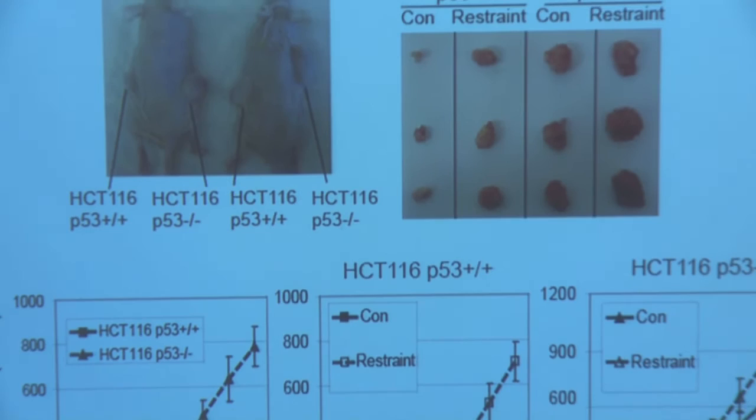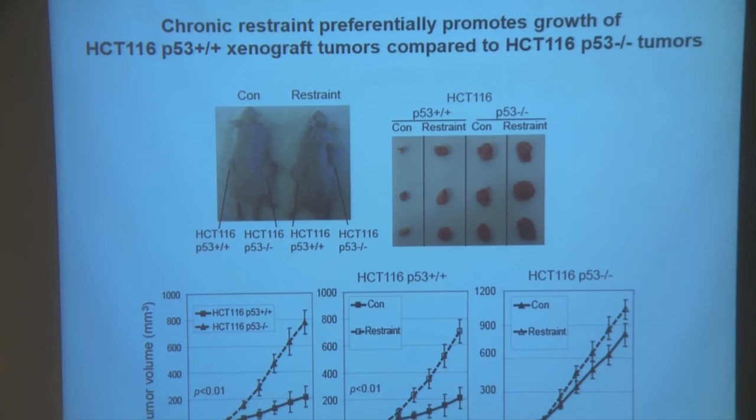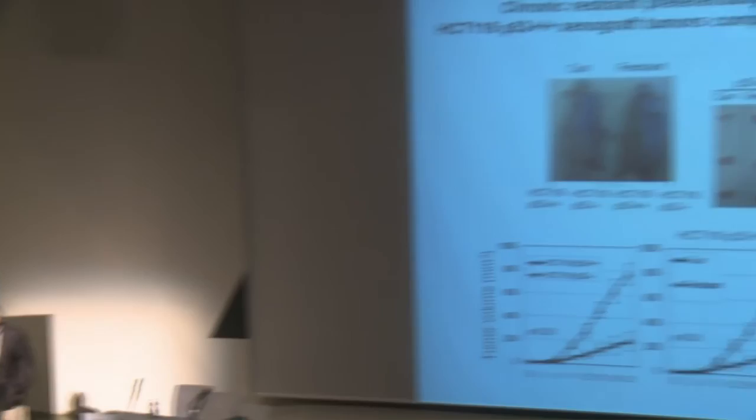In conclusion so far: mice under psychological stress, perhaps like humans under psychological stress, are more prone when exposed to a carcinogen like gamma radiation to develop tumors at a higher rate and at an earlier time, and that correlates with lower levels of P53 due to chronic restraint.